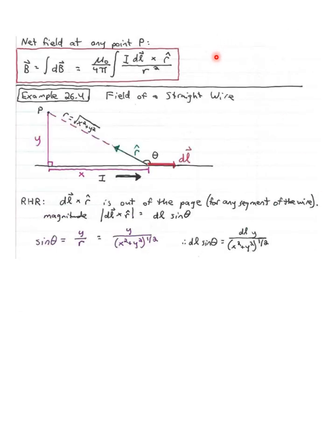There's the equation again at the top. Let's go straight to an example — example 26.4 in the book. It says: find the magnetic field produced by an infinitely long straight wire carrying a steady current I. Of course, we're probably never going to come across an infinitely long straight wire, but it makes for a good approximation when talking about a very long wire compared to the distance at which we're judging the magnetic field.